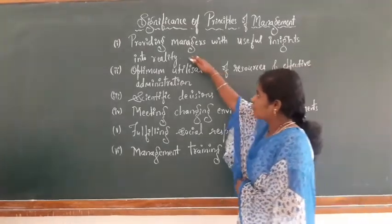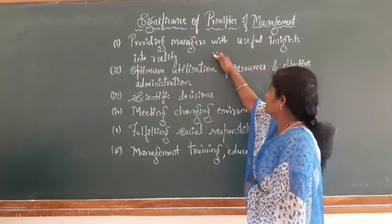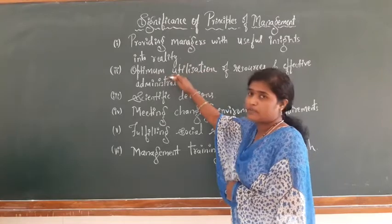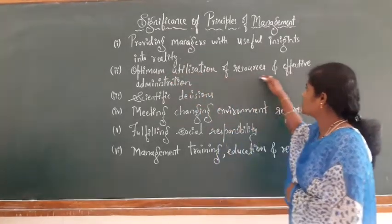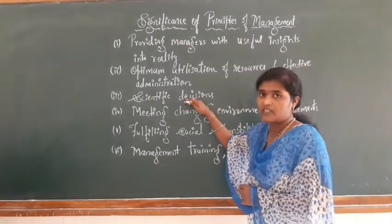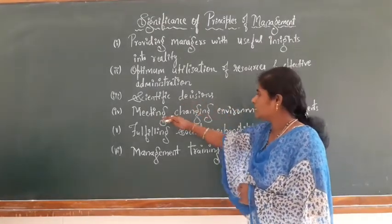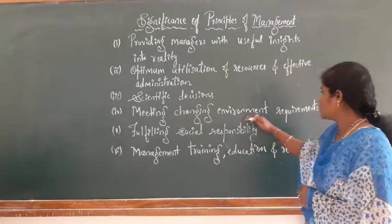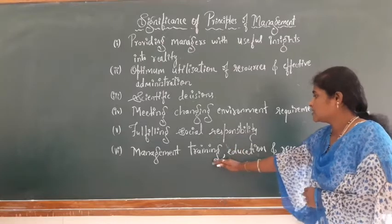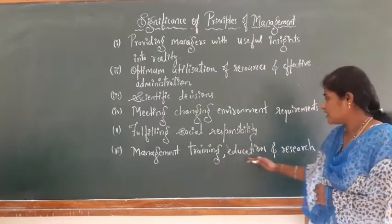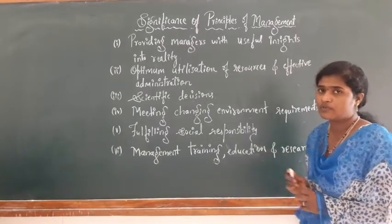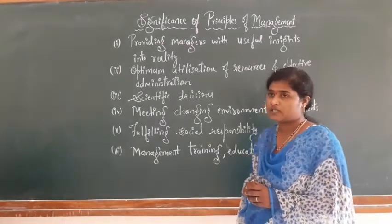There are mainly six importances. First, providing managers with useful insights into reality. Second, optimum utilization of resources and effective administration. Third, scientific decisions. Fourth, meeting changing environment requirements. Fifth, fulfilling social responsibilities. Sixth, management training, education and research. These are the six importances of principles of management.